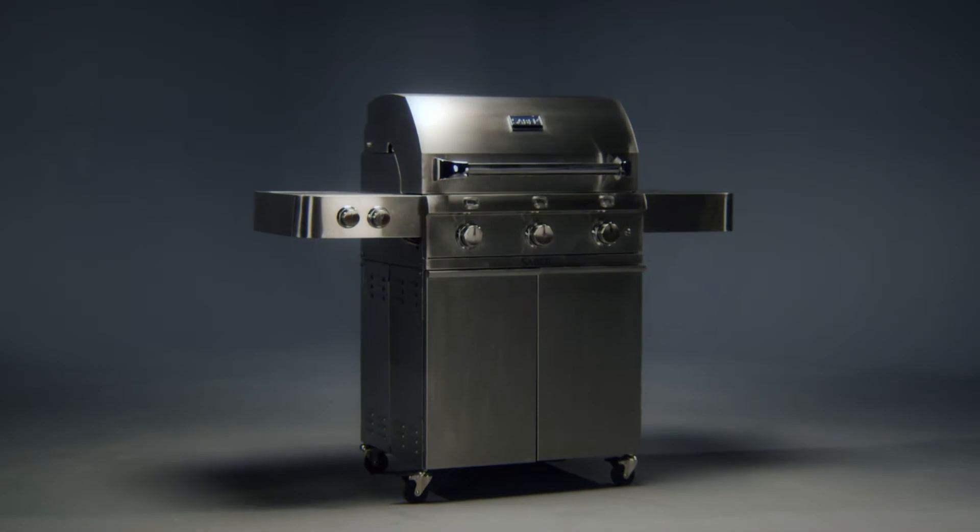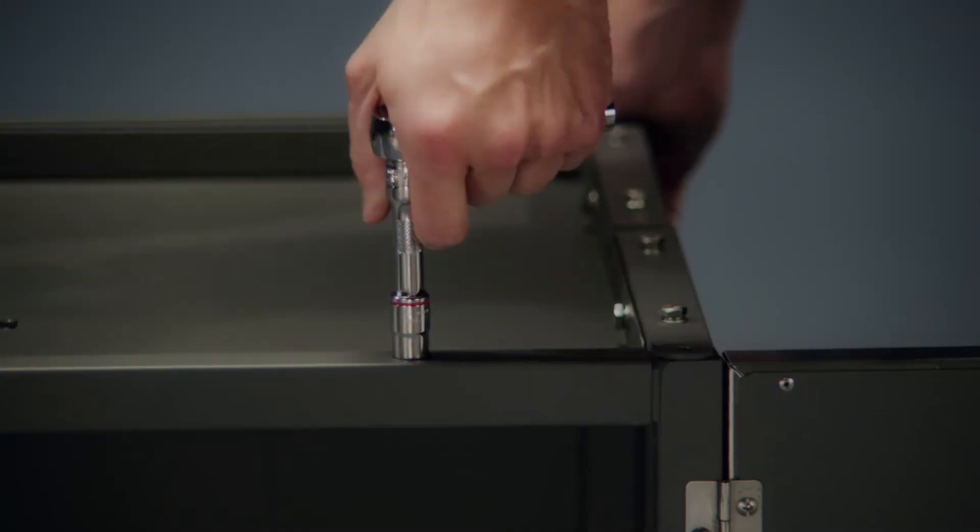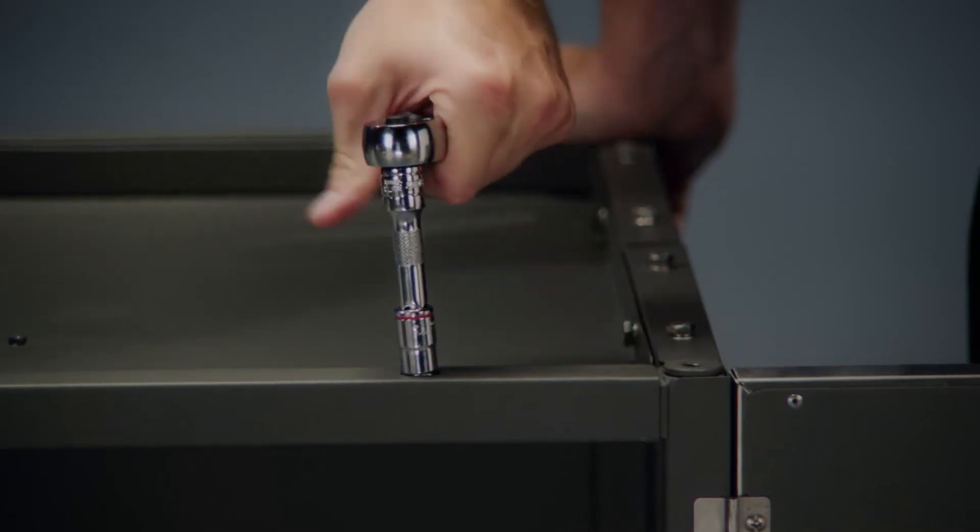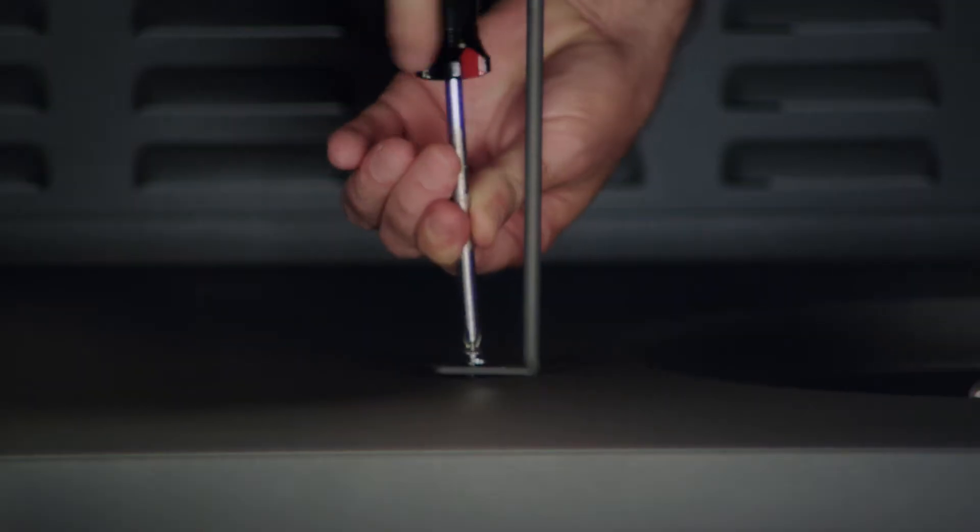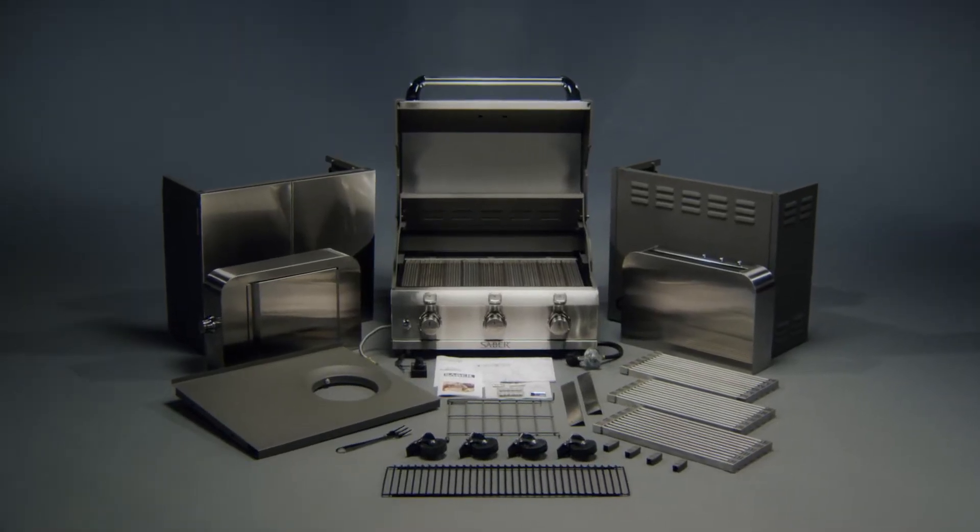We've made Sabre grills easy to assemble so you'll be grilling in no time. You'll need a 3/8 inch drive ratchet with 7/16 inch socket or a 7/16 inch combination wrench and a Phillips screwdriver. Grill assembly takes approximately 45 minutes start to finish.